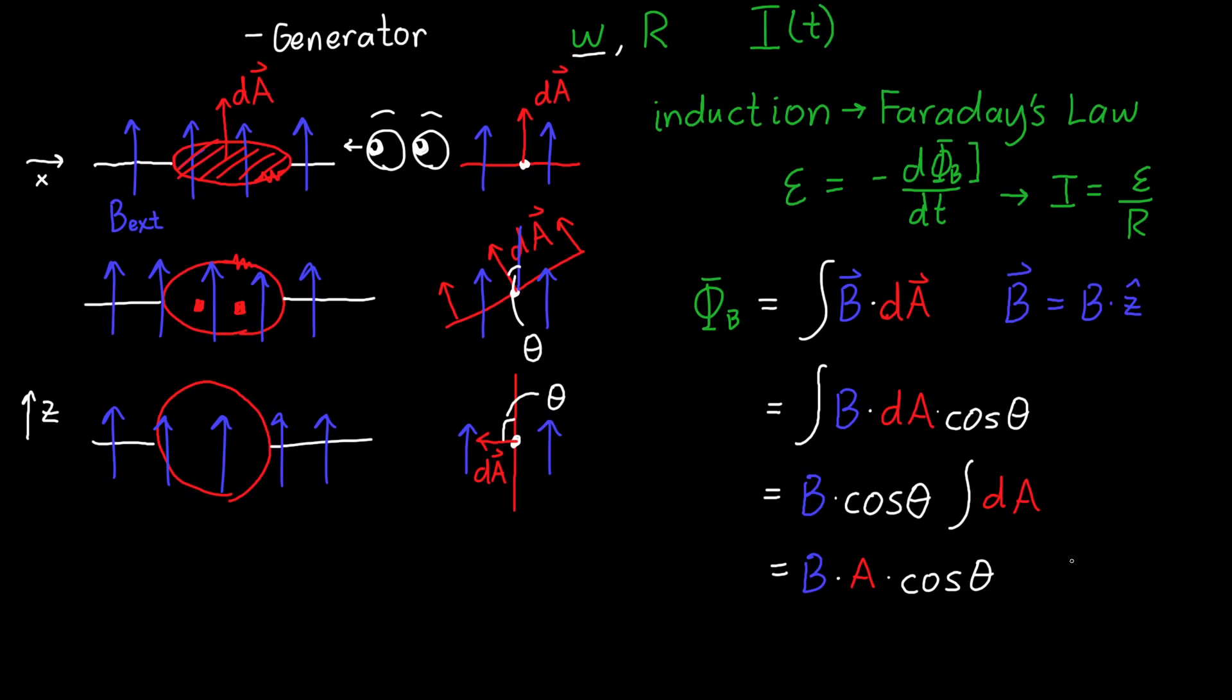So if you remember your mechanics class, the change in theta over some time is equal to omega times t. So if theta is initially zero, then we can just say that this is theta. So if we write this in terms of time, we have B times A times cosine of omega t.